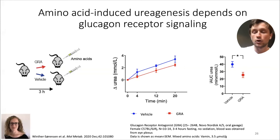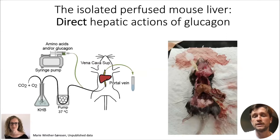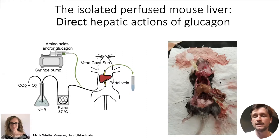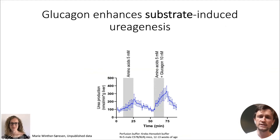Marie also assessed hepatic action of glucagon using the perfused mouse liver — an elegant model because we can directly assess what we put into the portal vein and what is derived or secreted from the mouse liver. If we add amino acids, ureagenesis is increased; if we add glucagon, this is significantly increased compared to amino acids alone.